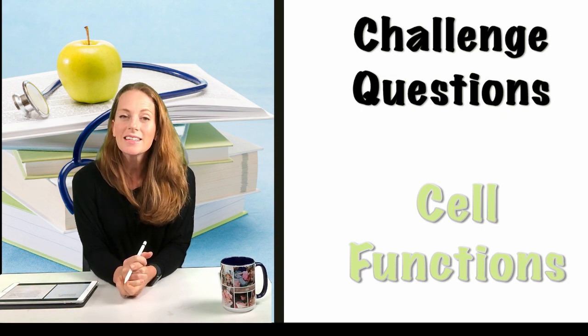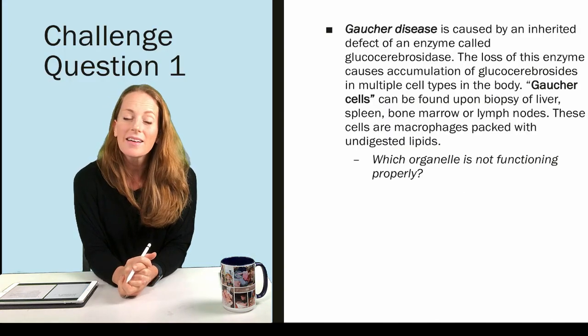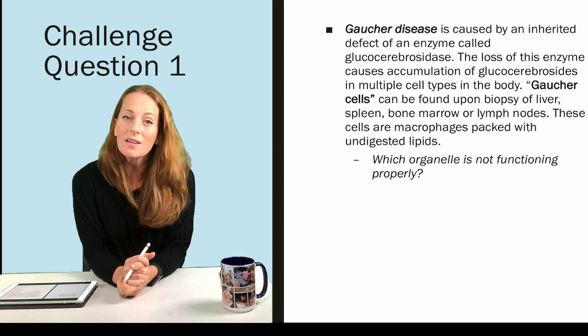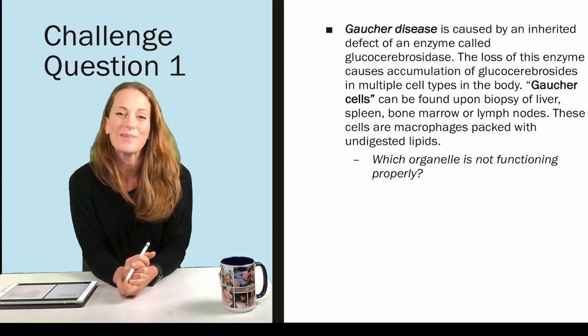Gaucher disease is a very rare disease caused by a genetic defect in the GBA gene, which encodes glucocerebrosidase.